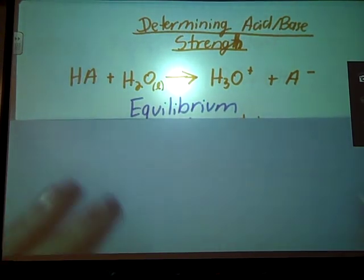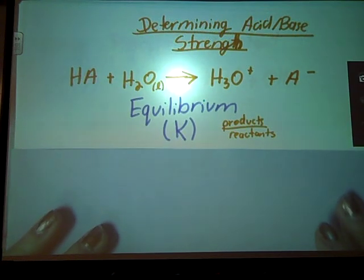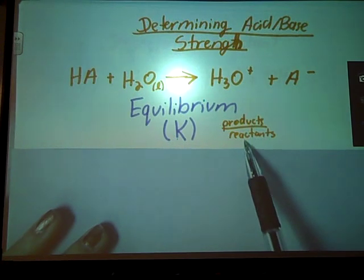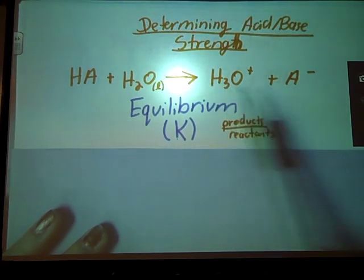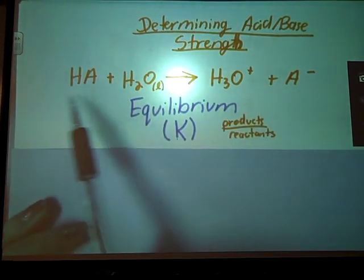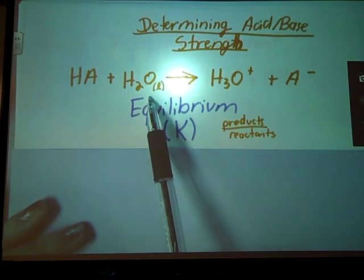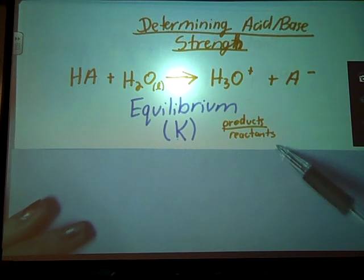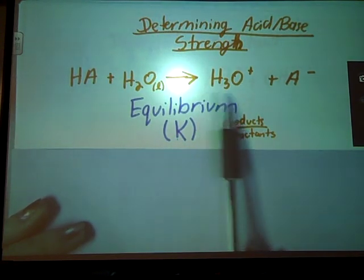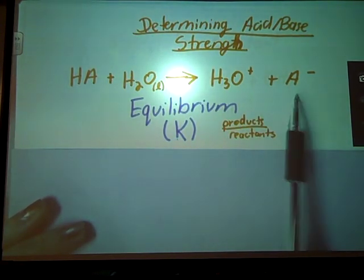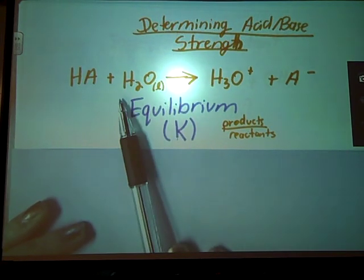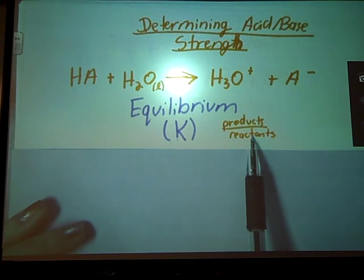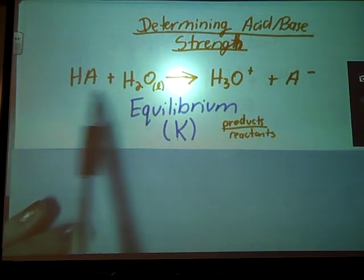And that can be represented numerically by the symbol K. This K is going to be products over reactants, so our concentration of our products as compared to our concentration of reactants. Big numbers for K's imply that my reaction has gone far to the right - more products than reactants. A small K means this reactant number is bigger. My reaction has not gone very far.